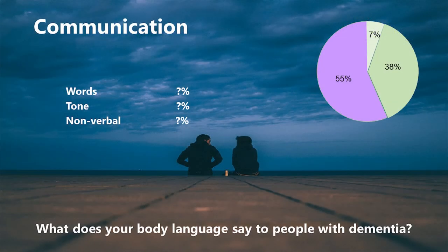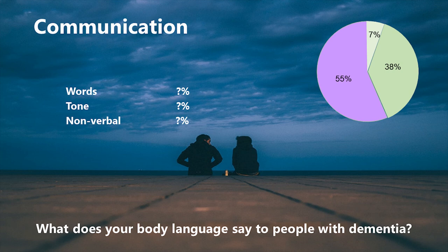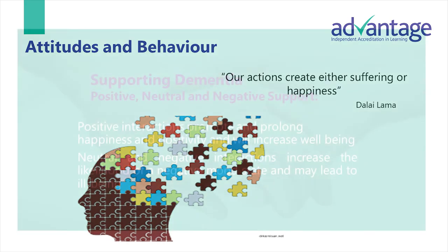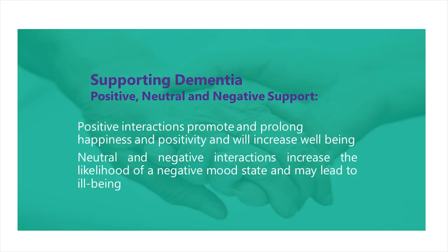In these last few slides, I want to talk a little bit about supporting people with dementia. Clearly, communication is a really important part of this. It's well worth taking some time to think about how you communicate. For many of us we think it is all about the words that we use, but the reality is that the words we use really only make up about seven percent of the communications message. The tone of the message is vitally important and our body language even more so. So when you're next communicating, think about your tone and body language at least as much, if not a lot more so, than the words you're using. It's also important to think about our attitudes and behaviours. To quote the Dalai Lama, our actions create either suffering or happiness. Positive interactions promote and prolong happiness and positivity and will increase wellbeing.